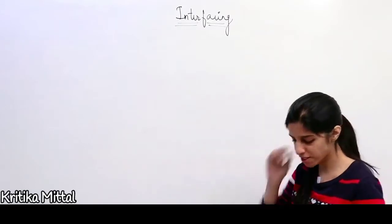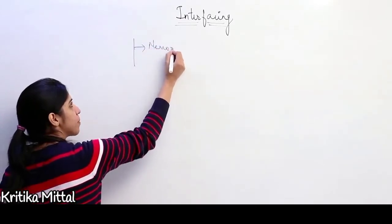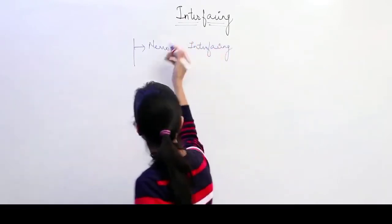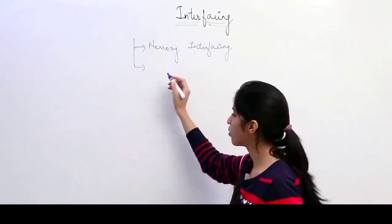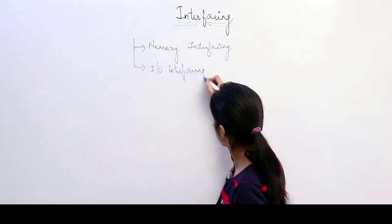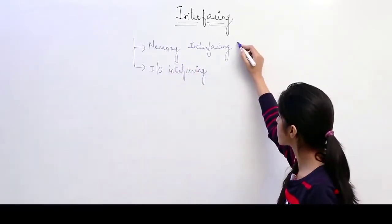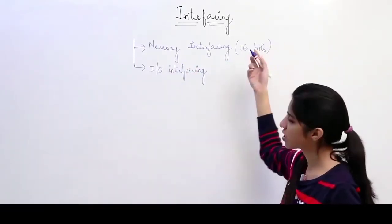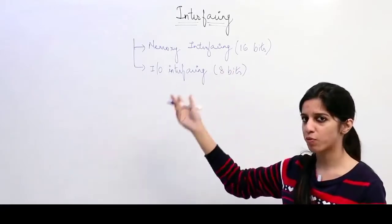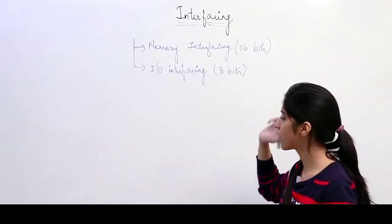Now we look at interfacing. Interfacing: either you can interface memory, or we can interface any peripheral devices, that is I/O devices. So we can do I/O interfacing. Memory interfacing is going to take 16 bits — this is 16-bit interfacing — and this I/O interfacing is 8 bits. Any input/output devices that we are going to connect to a microprocessor are going to have 8-bit addresses. First we are going to look at memory interfacing, then we look at I/O interfacing.